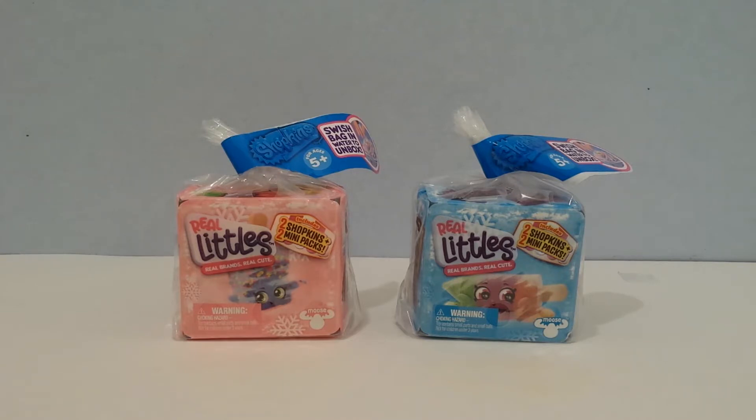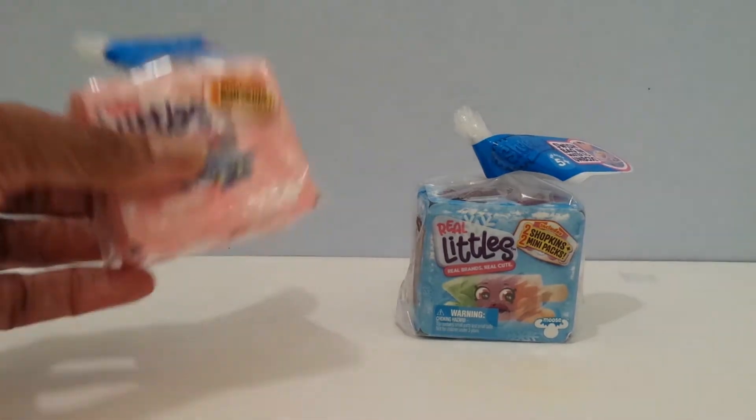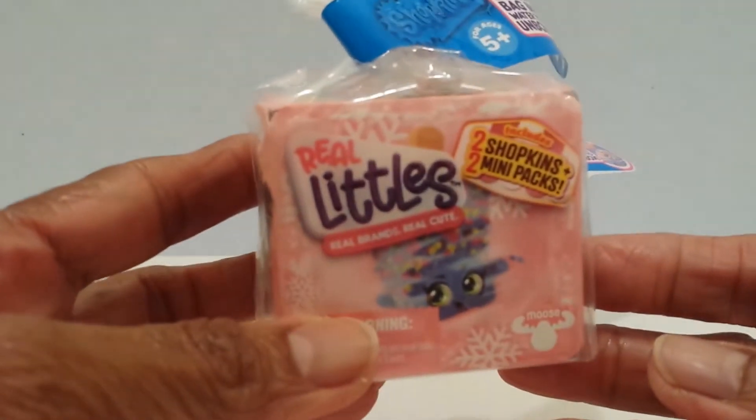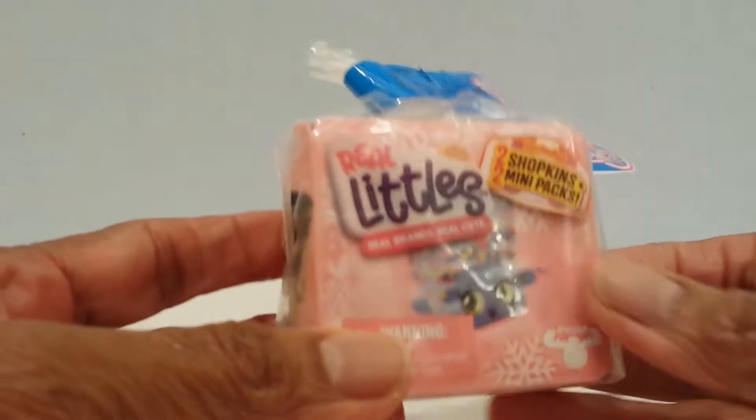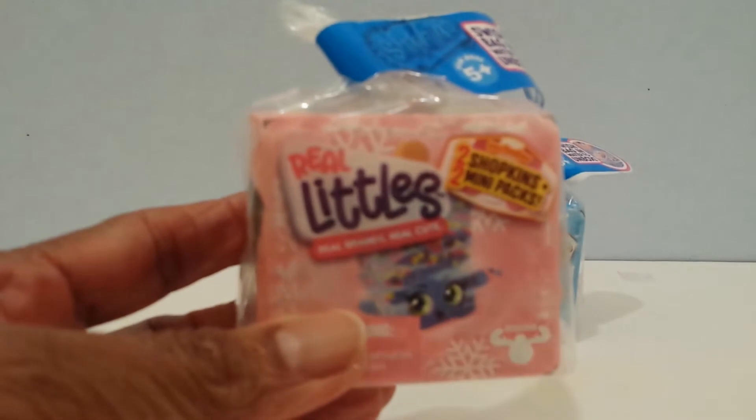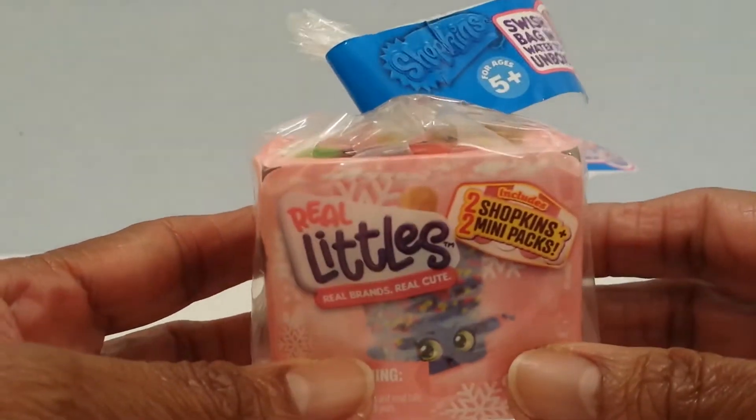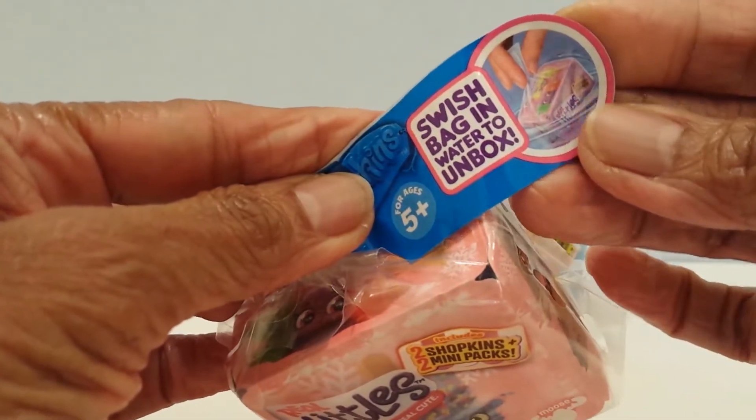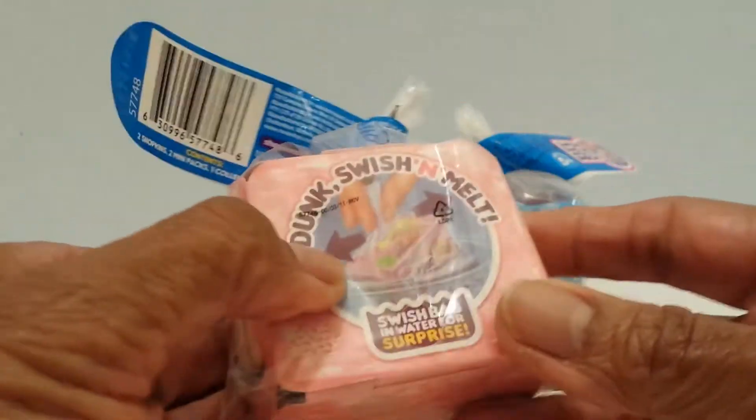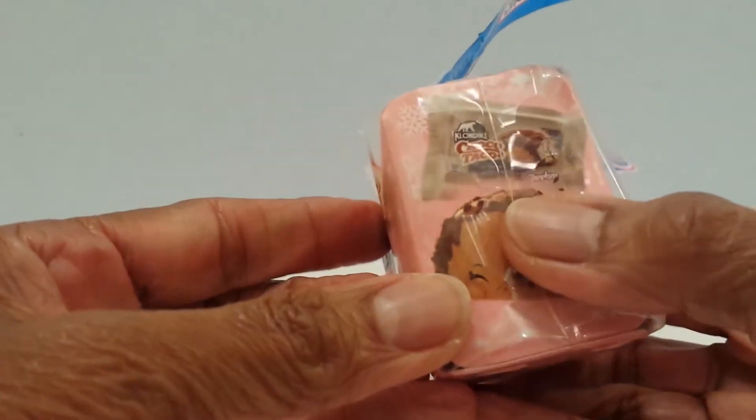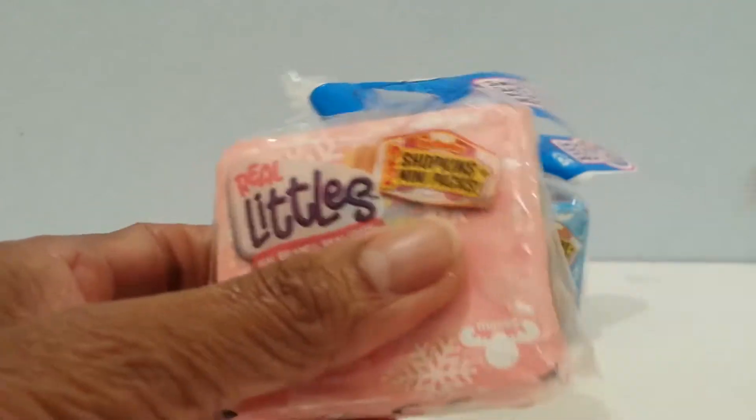Okay, so here I have pink and blue. I think there were three colors: pink, blue, and lavender. This is how the packaging looks and it says here that there are two shopkins, two mini packs. It says swish bag and water to unbox, and then they show you how it's done. Here are some of the ones you can get: Breyers ice cream and Klondike.